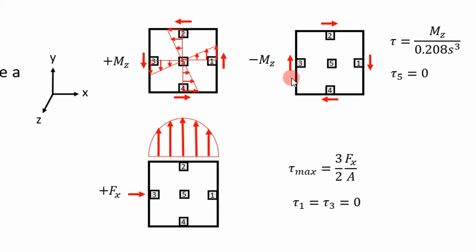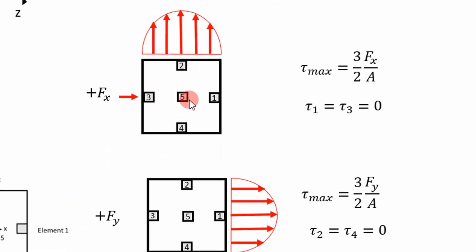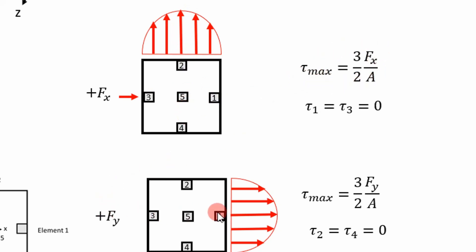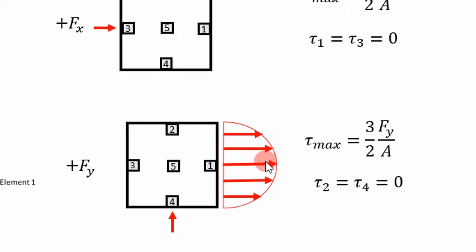If you draw these out, you can begin to recognize patterns. The worst case stress on the outside is given by the torsion equation, and in the middle you have zero stress. Similarly, for a shear force in the x direction, you get a shear stress distribution multiplied by a parabola, as seen in most textbooks. You won't have any shear stress on the outside — it's zero at elements 3 and 1 — but in the middle you have your peak stresses given by that equation. Similarly, for shear stress in the y direction, your peak stress occurs at elements 1, 5, and 3, and you have zero stress at the outside at elements 2 and 4.